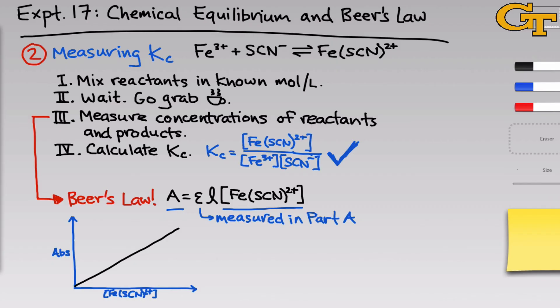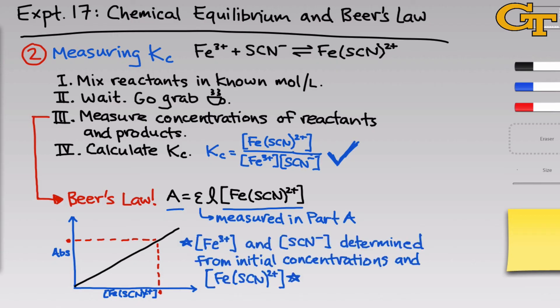In part B, we'll prepare reactions with known concentrations of the starting materials and unknown concentrations of the product, and we'll measure absorbance to determine the concentration of the product. We might measure an absorbance like you see here in red, and we can project that onto the x-axis in a graphical way, or we can use algebra to back-calculate the concentration of Fe(SCN)2+. From there, as I mentioned before, the equilibrium concentrations of Fe3+ and SCN- can be determined from their initial concentrations and the concentration of the product that we just measured.